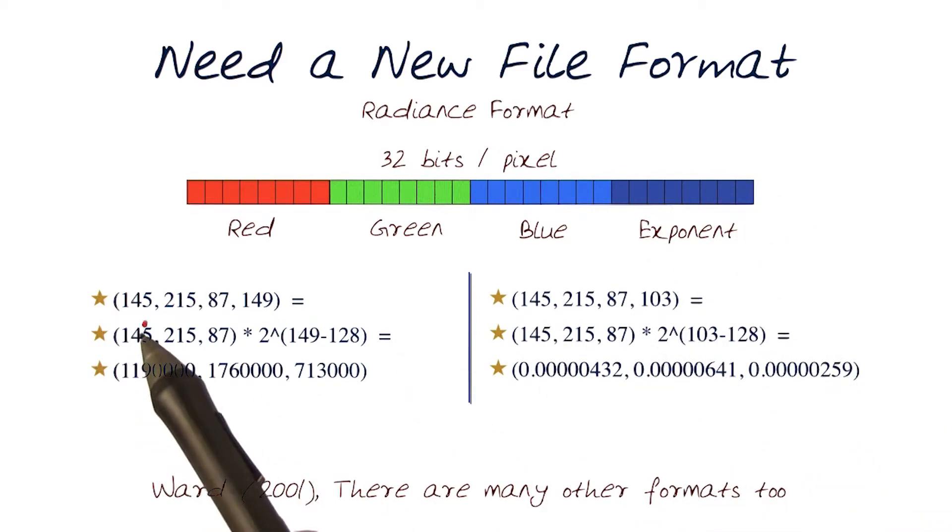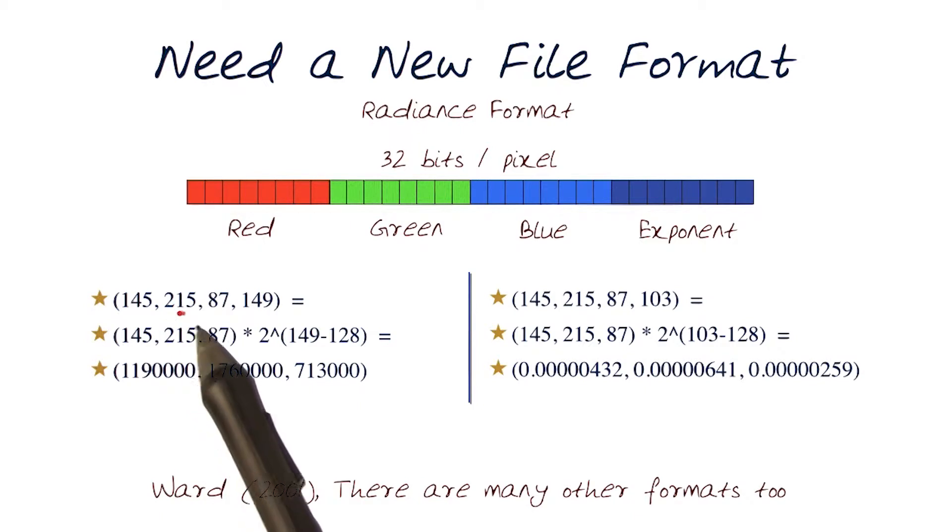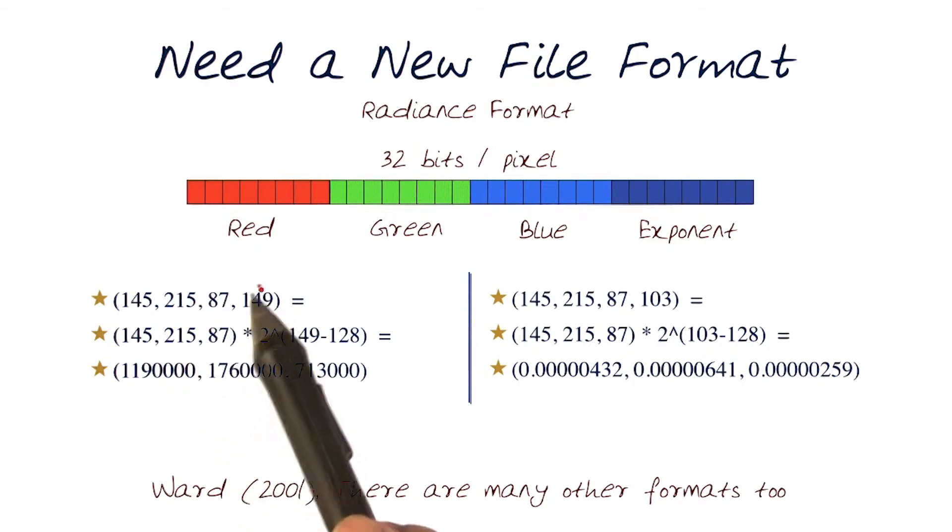Math works out the following way. Basically, what it means is now if I have an RGB value of 145, 215, 87, I'm going to actually add another exponent number here. And what this exponent basically does is takes the RGB values, multiplies with the 2 raised to the difference of 149 minus 128.